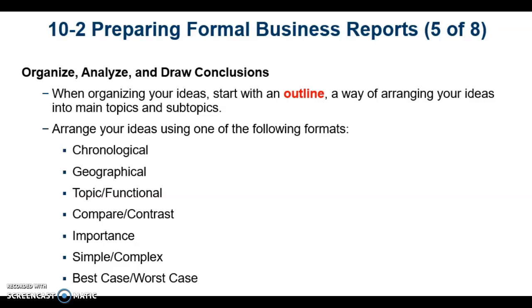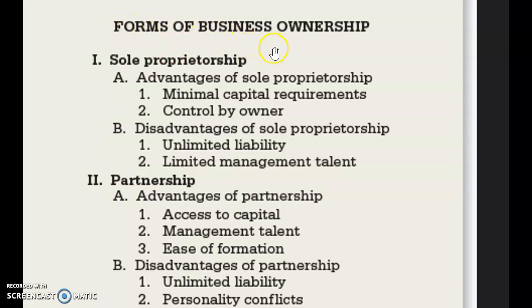Once you have performed your research, it's time to outline, analyze, and draw conclusions. An outline is a way of organizing your ideas by arranging your main topics and subtopics. Model document 10.3 provides a sample outline. Here is a sample outline — it has the title, Roman numerals with topics, then broken down into advantages and disadvantages, listing the advantages and disadvantages of each.